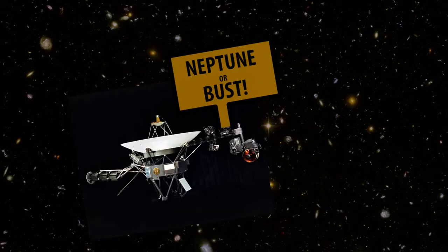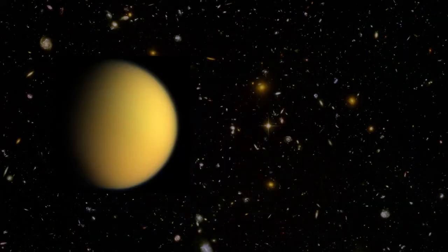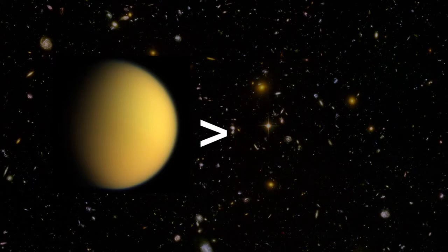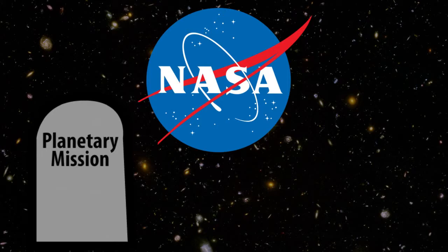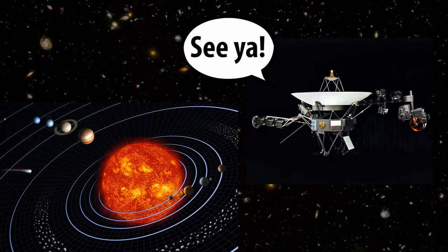While Voyager 2 continued on to Uranus and Neptune, Voyager 1's choice to go to Titan cost it the opportunity to visit Pluto. Undeterred, NASA decided it was time to end the planetary mission and begin the interstellar mission, focused on getting out of the solar system.